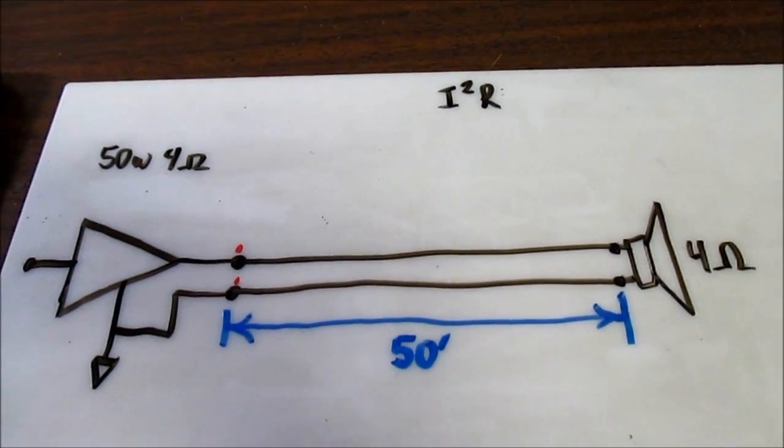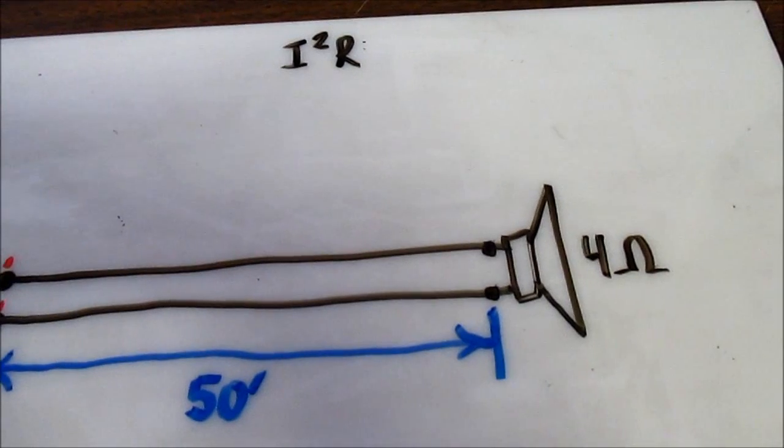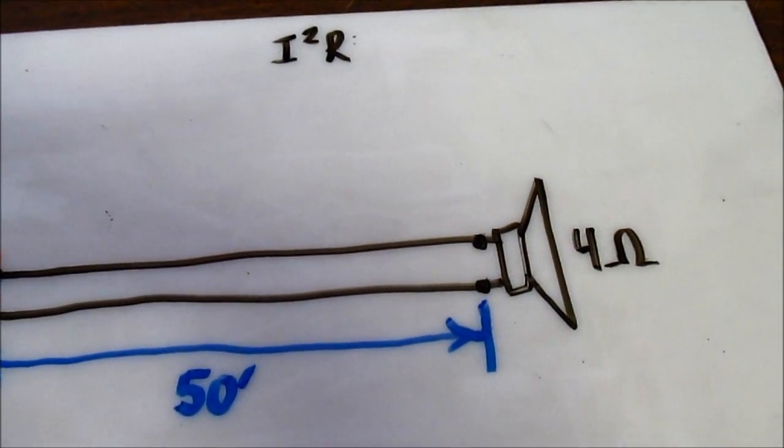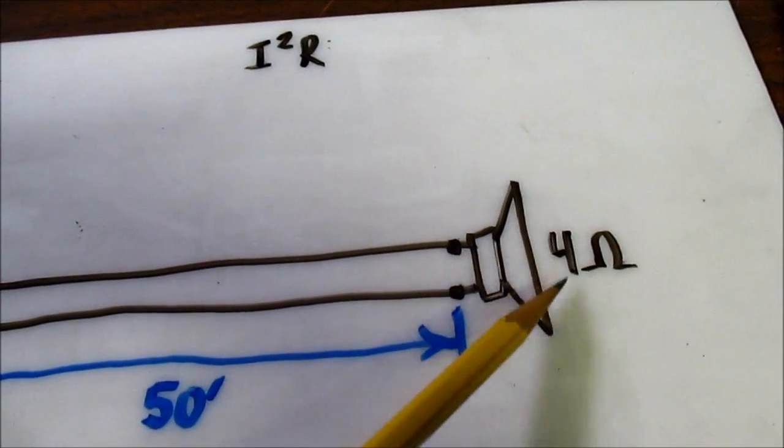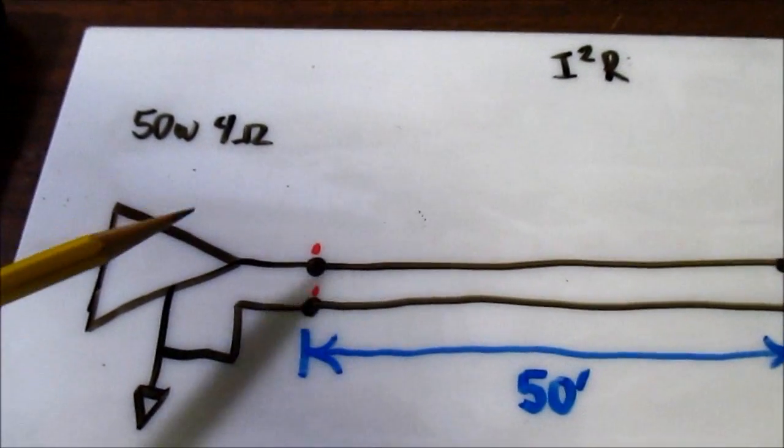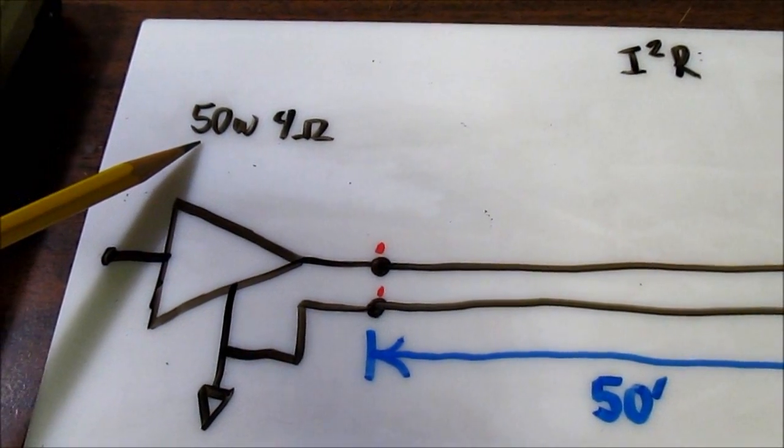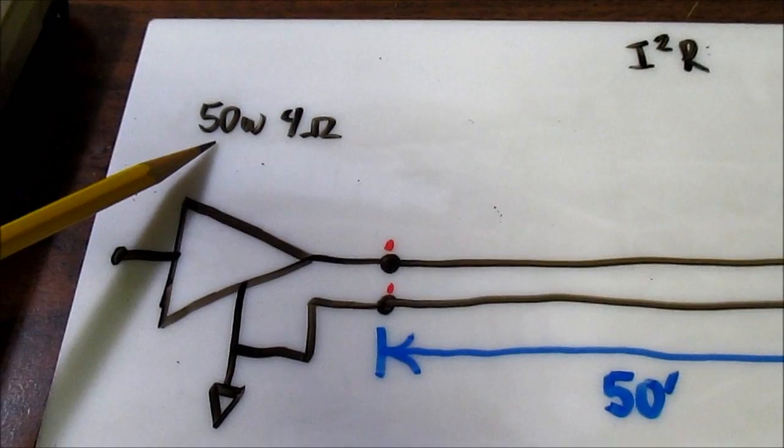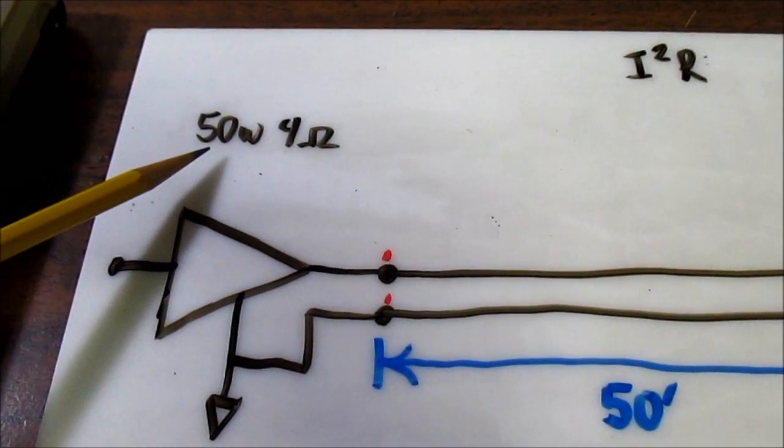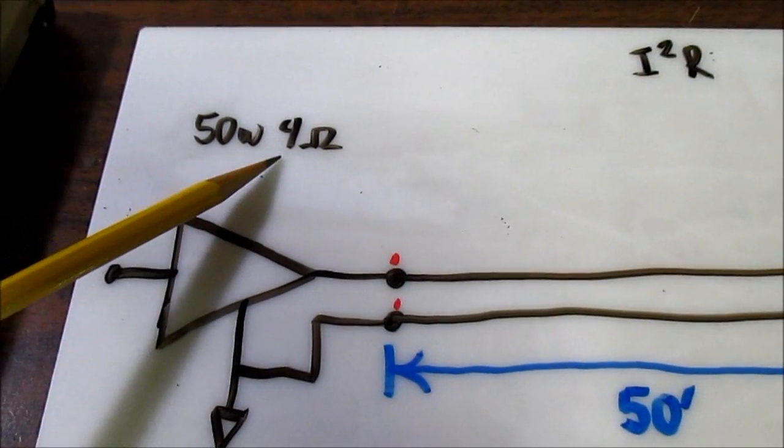We'll make some assumptions here. Now, a loudspeaker is a complex load. The impedance will vary depending on frequency. So we're going to just say this is a non-inductive 4-ohm load we have connected here. And we'll say that our amplifier can make 50 watts of maximum clean power, non-clipping or max power before clipping into a 4-ohm load.